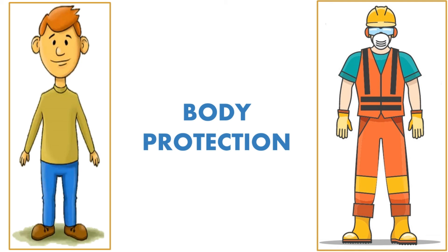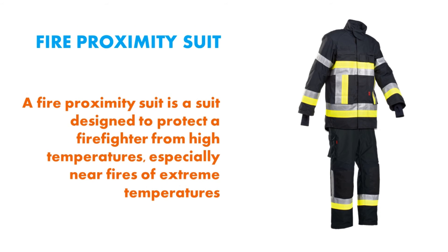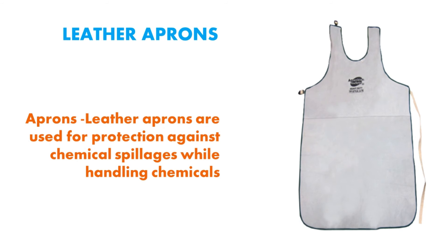Full body protection. Aluminized suits are used for work in general areas of high temperatures, with ambient heat protection up to 200 degrees Fahrenheit or 93 degrees centigrade. A fire proximity suit is designed to protect a firefighter from high temperatures, especially near fires of extreme temperatures. Leather aprons are used for protection against chemical spillages while handling chemicals.